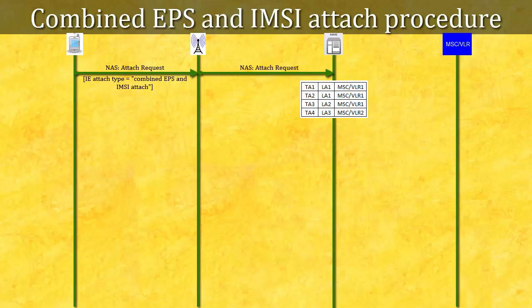MME maintains one mapping table between tracking areas and location areas. Location areas are further mapped to MSC or VLR that are serving those location areas. So if MME knows the tracking area of a mobile, it can easily detect the MSC or VLR corresponding to that tracking area. Remember: any UE attached to LTE cannot decipher its LAI (Location Area Identity) on its own — it can only decode tracking area. Mapping between tracking area and location area is done by MME, and LAI is always allocated by MME.